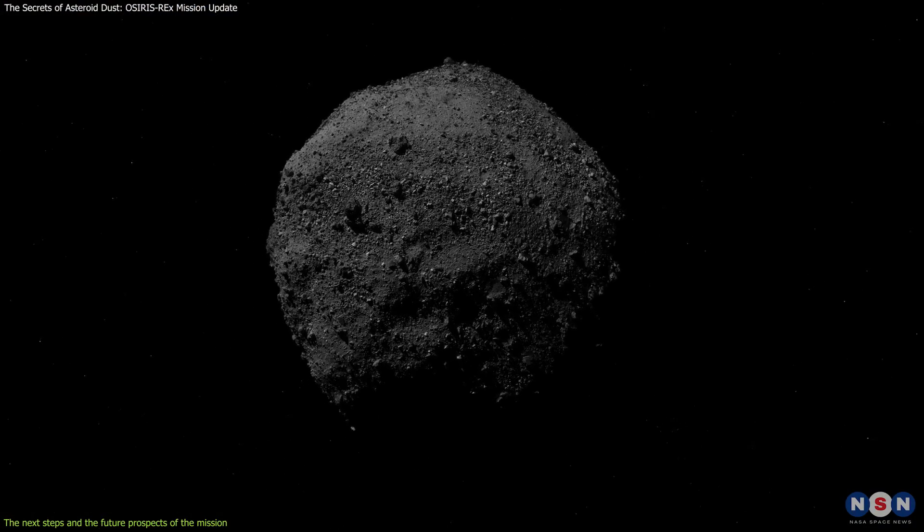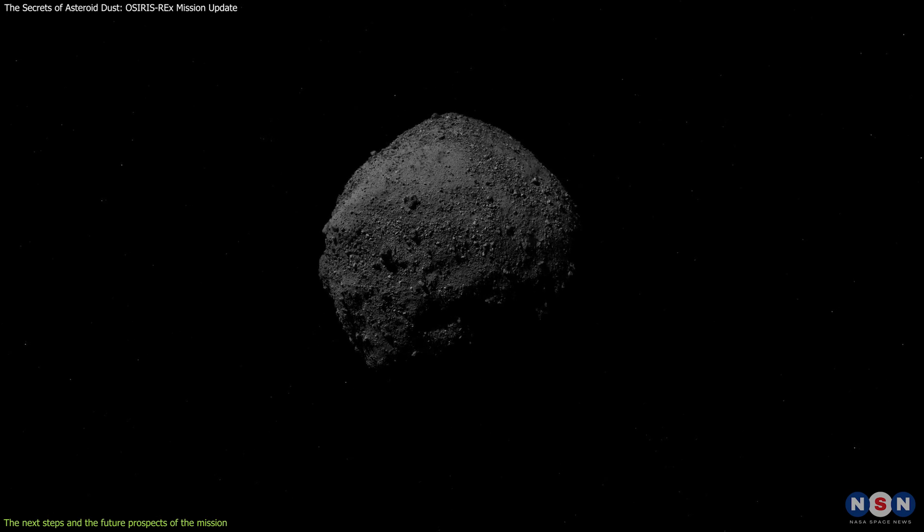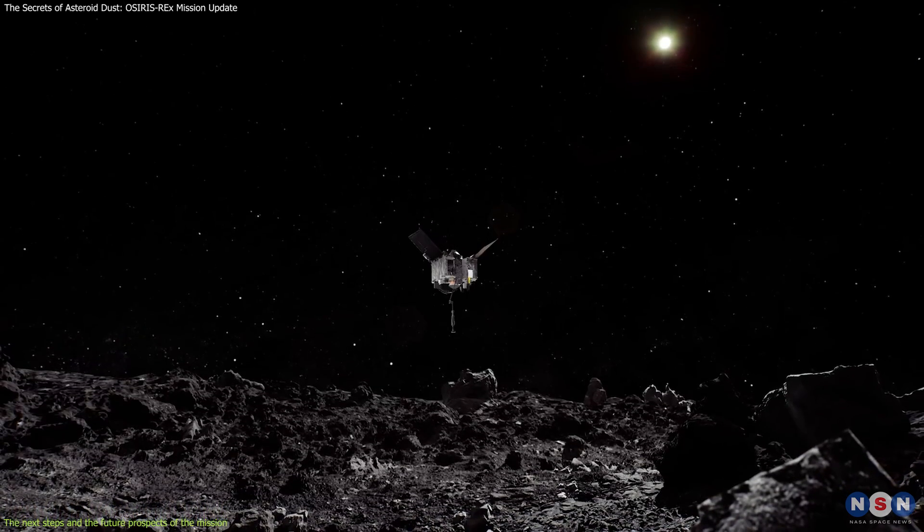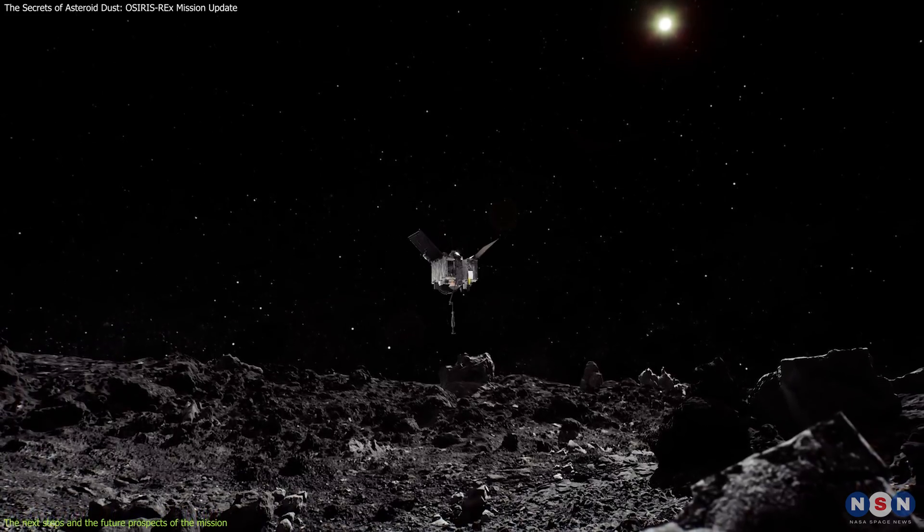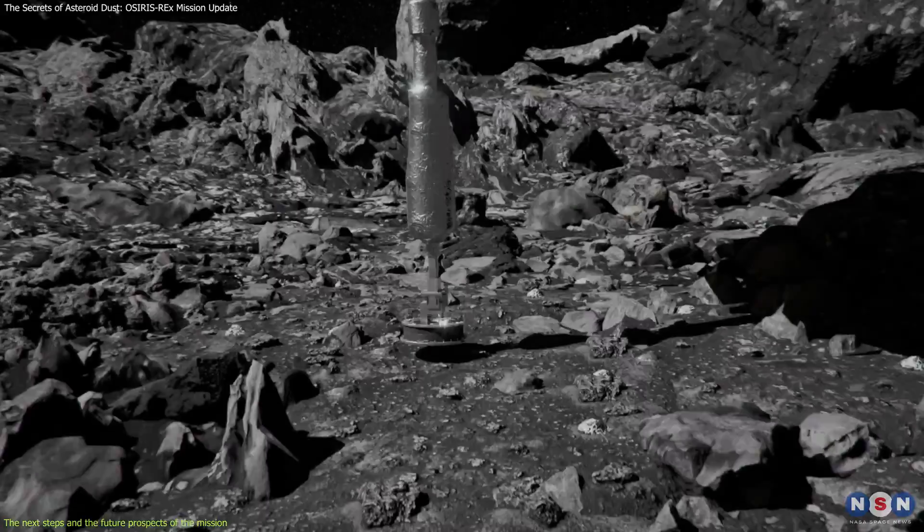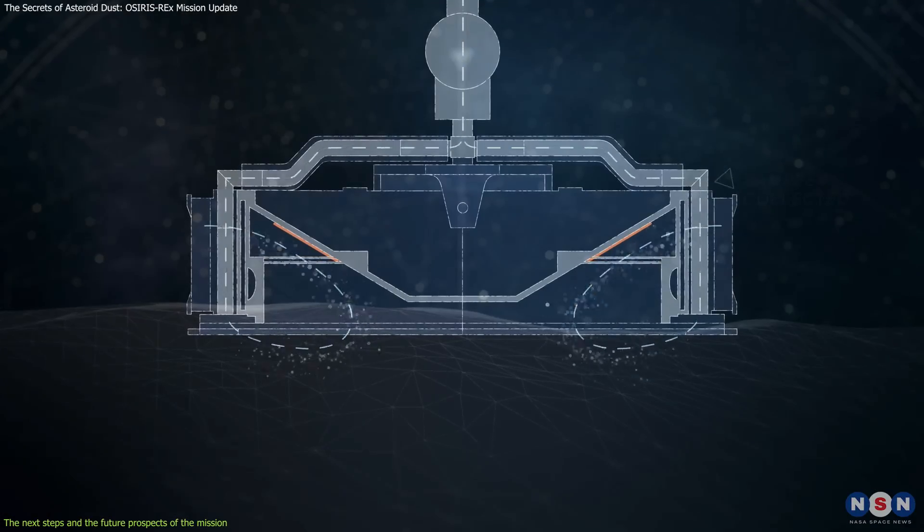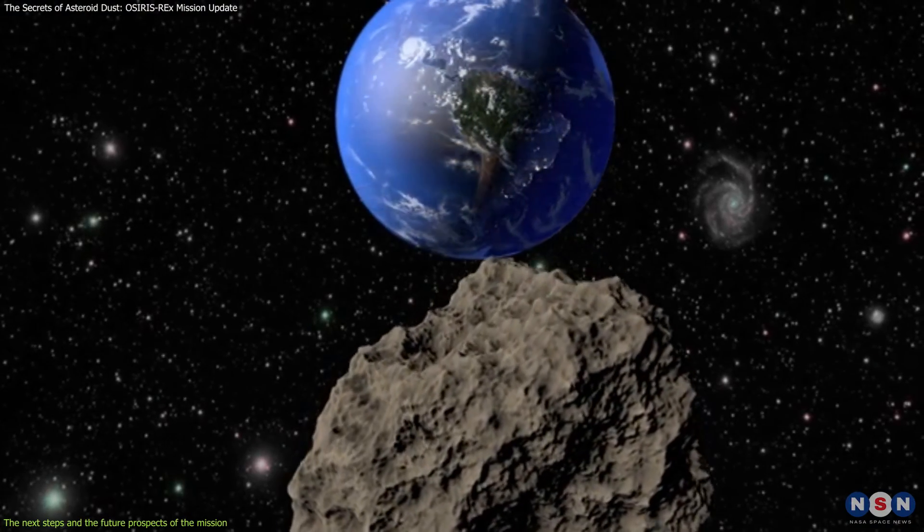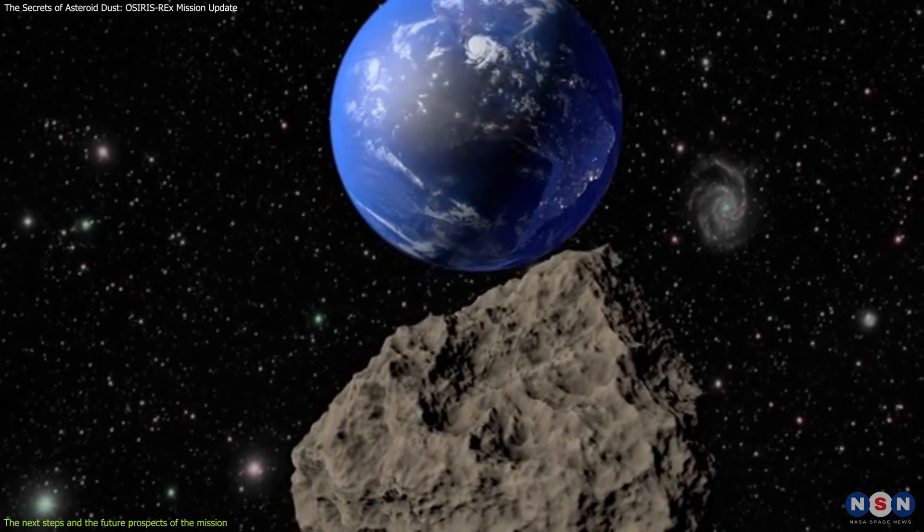Bennu has a small chance of colliding with Earth in the late 22nd century, and OSIRIS-REx has helped to refine its orbit and trajectory. The mission has also demonstrated the feasibility and the challenges of landing on and sampling an asteroid, which could pave the way for future missions that could deflect or redirect an asteroid if needed.